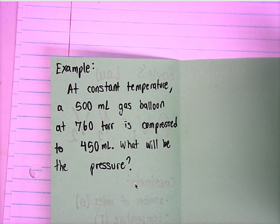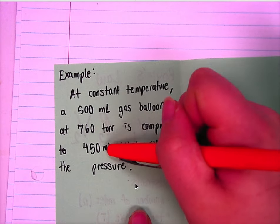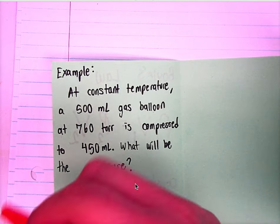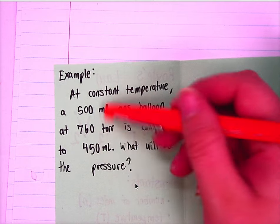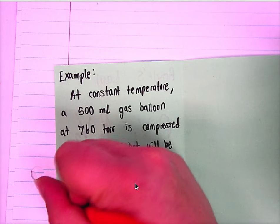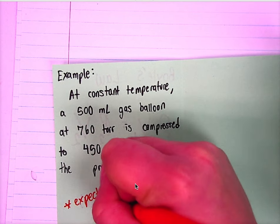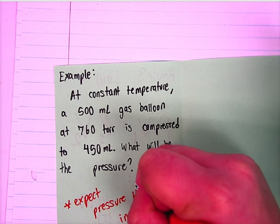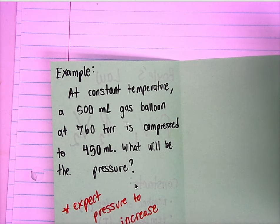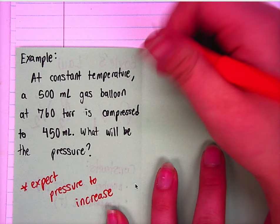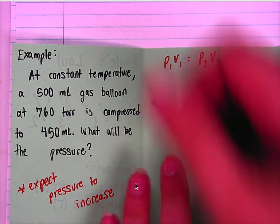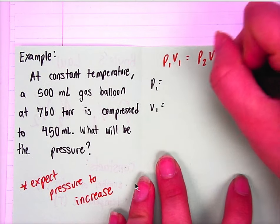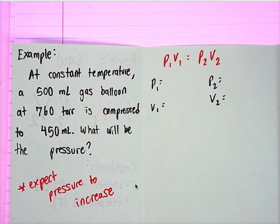Before we do any of these problems, we want to kind of get our expectations set. The balloon is getting smaller — it's being compressed. If it gets smaller, do we expect the pressure to increase or decrease? It will most likely increase because there's going to be less room for the molecules to move, so we expect pressure to increase, based on that inverse relationship we talked about.